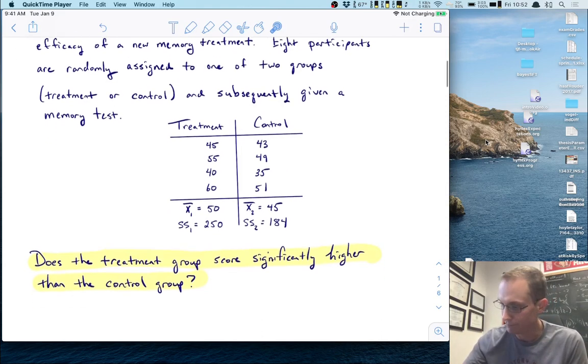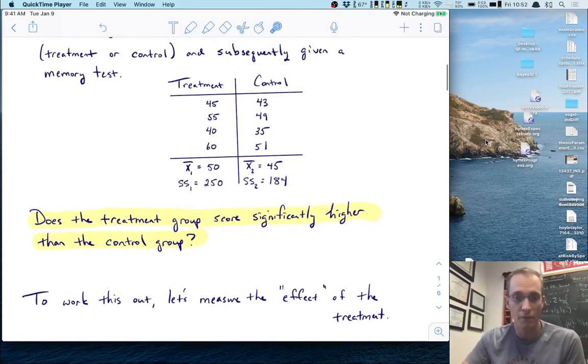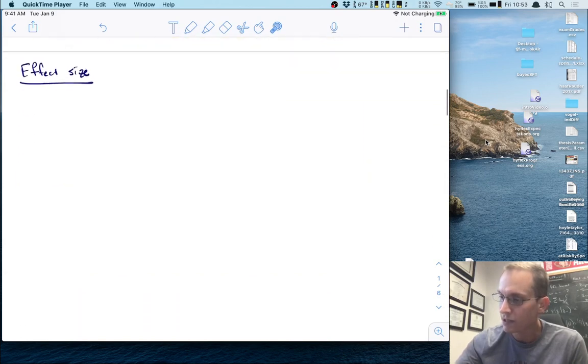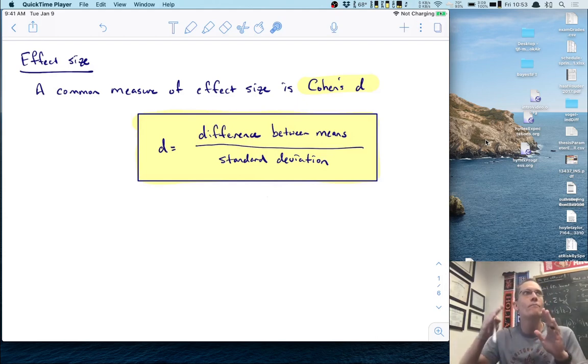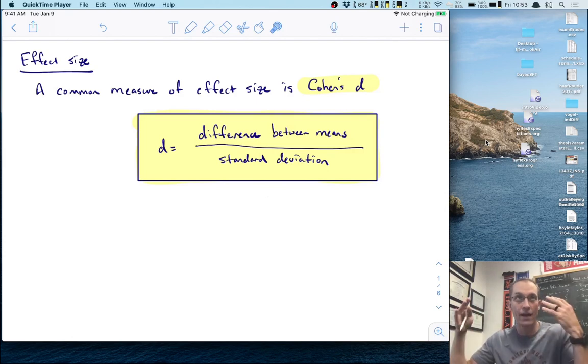To work this out, the first thing we're going to do is introduce a new descriptive measure: effect size. A common measure of effect size is something called Cohen's D, roughly defined as the difference between the means divided by the standard deviation. The effect size measures how big the treatment effect is in terms of the standard deviation.